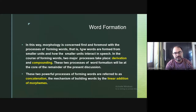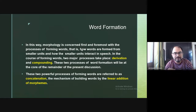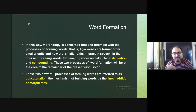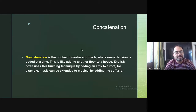These two powerful processes of forming words are referred to as concatenation — the mechanism of building words by the linear addition of morphemes. This is associated with the syntagmatic process, where at the linear level we add new morphemes to the root. Concatenation is the brick-and-mortar approach where one extension is added at a time — for example, attaching -ily to 'happy' to make 'happily,' one morpheme at a time, like adding another floor to a house.